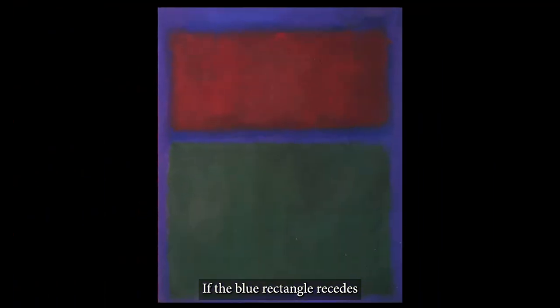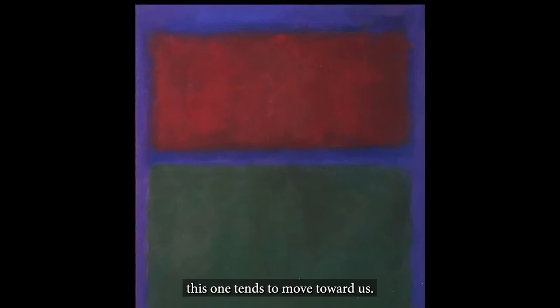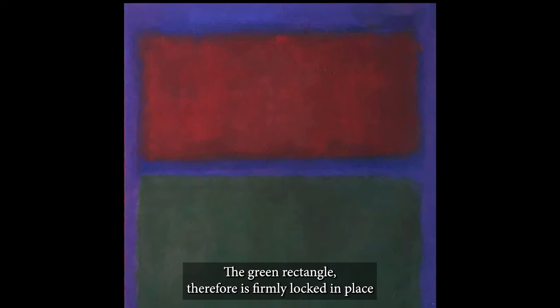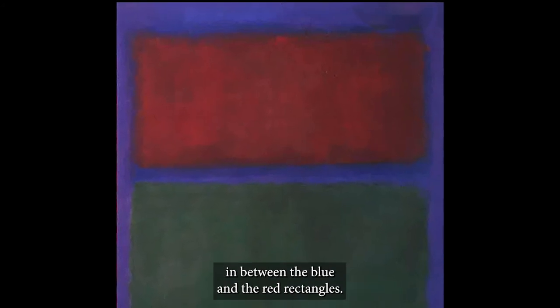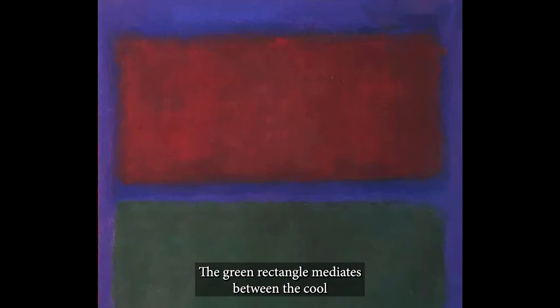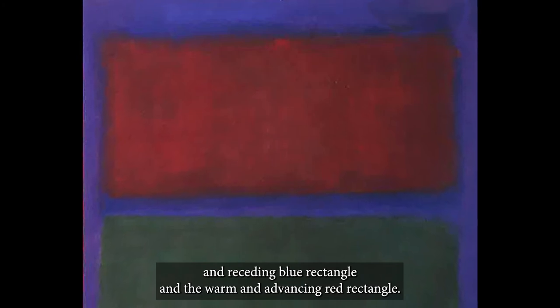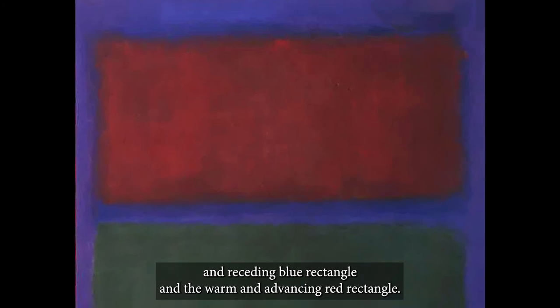The rusty red rectangle is the smallest of the three, seems to be less substantial, less stable, less solid and secure. If the blue rectangle recedes and if the green rectangle stays put, this one tends to move toward us. The green rectangle, therefore, is firmly locked in place in between the blue and the red rectangles. The green rectangle mediates between the cool and receding blue rectangle and the warm and advancing red rectangle.